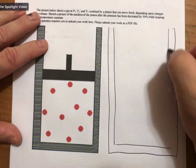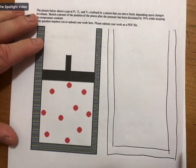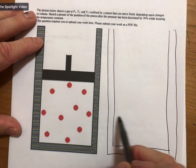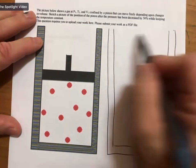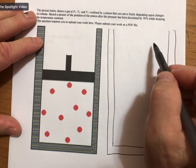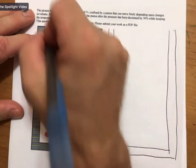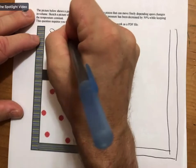But what I'm looking for here is a clear picture of the piston either moving lower or moving higher, depending upon what's happening here. And in order to figure out what's going on, we're going to use the ideal gas law.